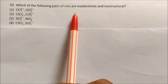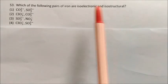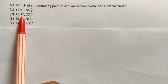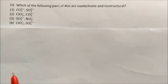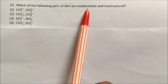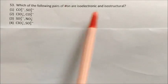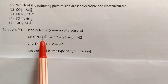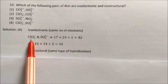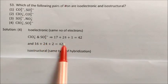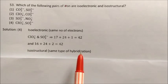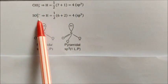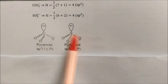Question: Which of the following pairs of ions are isoelectronic and isostructural? The options include carbonate, sulfite, ClO3−, NO3−, and SO3 2−. For isoelectronic, we need the same number of electrons. ClO3− and SO3 2− both have 42 electrons — they are isoelectronic. They are also isostructural because they have the same type of hybridization, sp3 for ClO3−. So the answer is the pair ClO3− and SO3 2−.